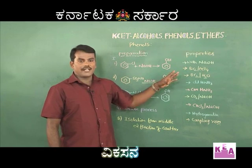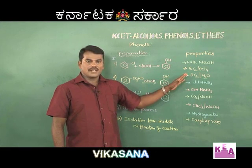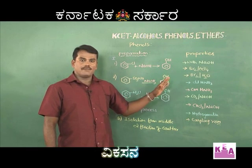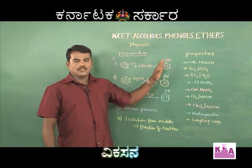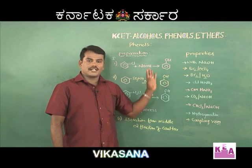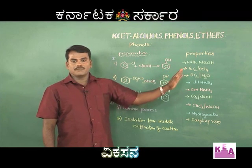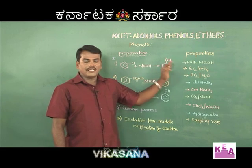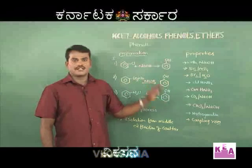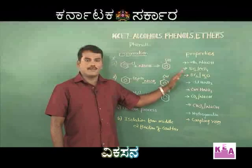Why do we say phenol is not an acid? To call any compound an acid, it must decompose sodium bicarbonate or carbonates. Since phenol is weaker than carbonic acid, it is not able to decompose carbonates and bicarbonates. Therefore, phenol is called an acidic compound but not an acid — its dissociation constant is very small. However, phenols are strongly acidic when compared to alcohols.